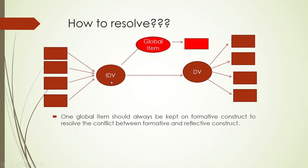On the canvas, the independent variable on a formative scale — because arrows are moving inside — will be connected with the global item, which is on a reflective scale. There is only one measured variable there, which is reflective, and we are connecting both of them.